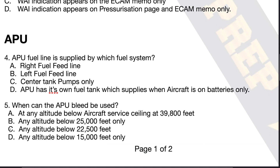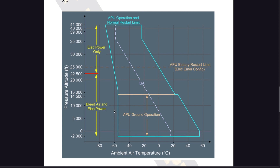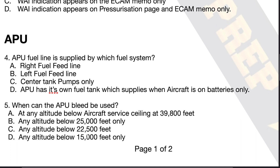The answer is very obviously option C: any altitude below 22,500 feet. The APU can be used at any altitude up to 39,800 feet — the aircraft service ceiling — but only the APU electrical power. For example, if you lose an engine at 39,000 feet, you can switch on the APU and use it to back up AC bus 1 or 2. However, at 39,000 feet, the APU bleed will not switch on — it will only switch on if the aircraft is below 22,500 feet. The FCOM states: bleed air and electrical power is only available below 22,500 feet. Some aircraft have this limitation set at 20,000 feet, but for the purpose of this question, the answer is C.